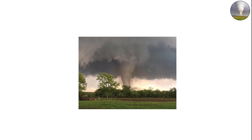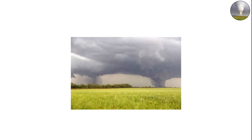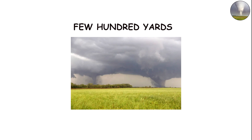Cone tornadoes often mark the mature stage of a storm, when the tornado has fully developed and is at its most stable in terms of structure. They can range from a few hundred yards to nearly a mile wide. Many strong tornadoes begin as cone shapes before evolving into something even more dangerous.